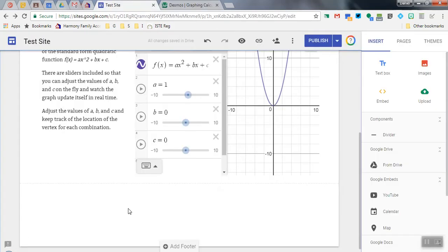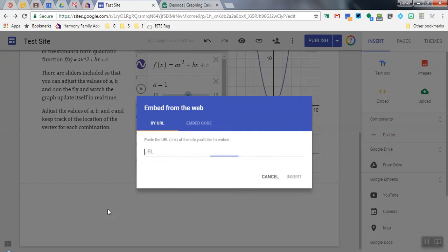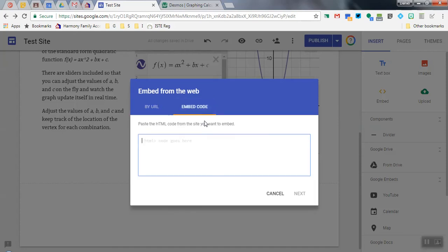When I go back to my Google site, I'm going to double-click, and when I click on Embed, this time I'm actually going to click on Embed code, paste it in, and click Next.